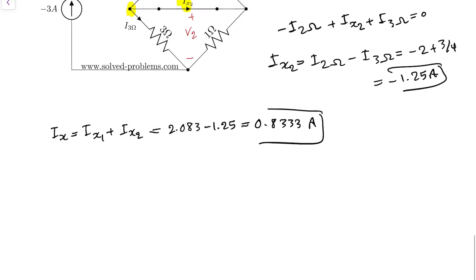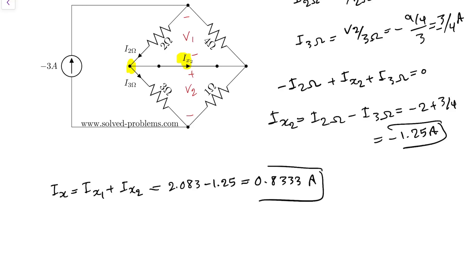Now, for the same circuit, replace that 1-ohm resistor with a 6-ohm resistor and try finding IX. Please find it and post your answer in the comments below. Thank you very much, and let me know if you have any issues or suggestions. Thanks, bye.